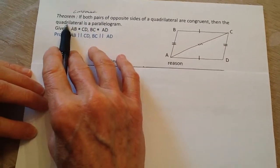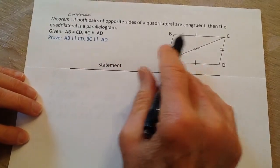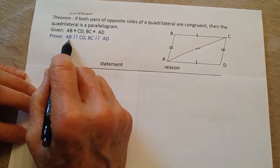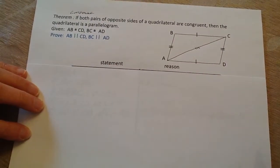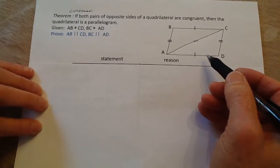...then the quadrilateral is going to be a parallelogram. And by saying that, that means that the opposite sides are parallel, which is the definition of what a parallelogram is.